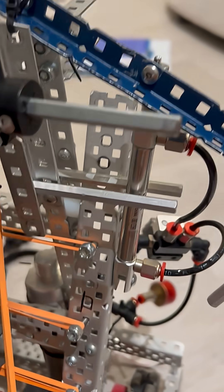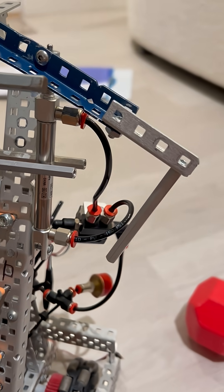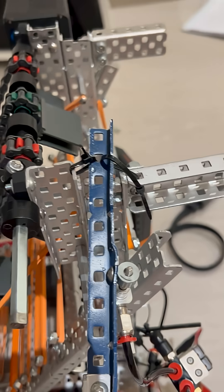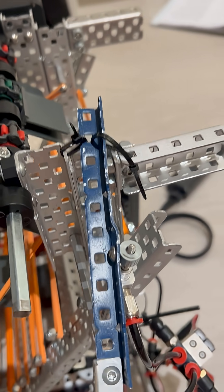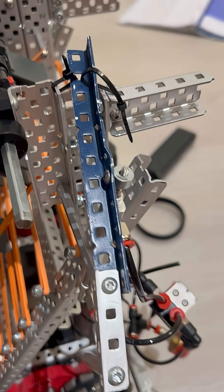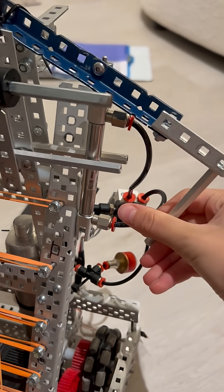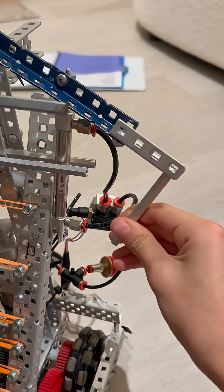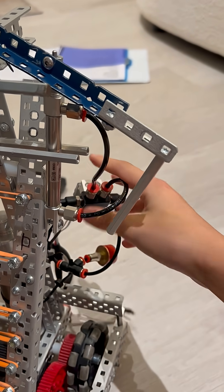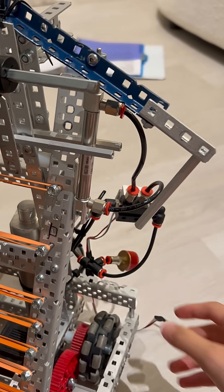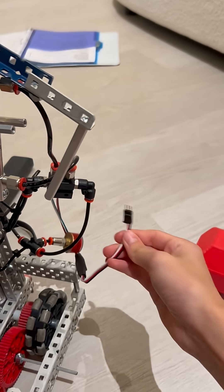So the first step in making a hook is you have your piston and you have to attach that to the side of your robot. It can be a little diagonal, but the most important thing is that it's attached to the side of your robot and it's able to move slightly.